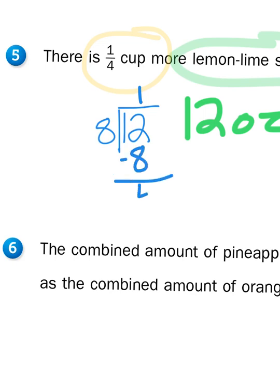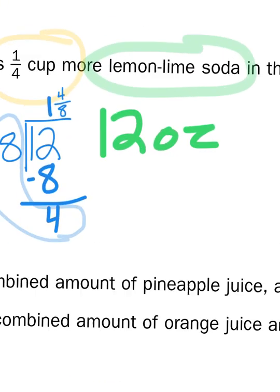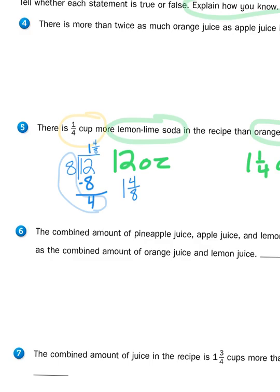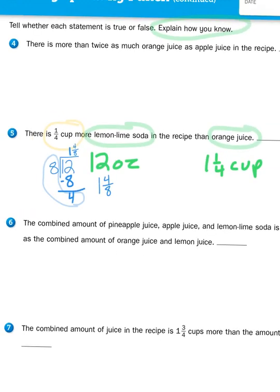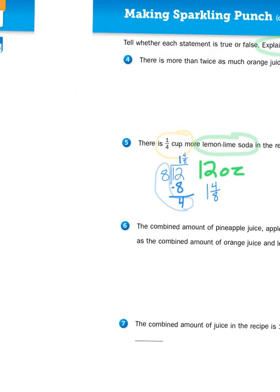So, 12 minus 8 leaves me 4. 4 is too small. It's smaller than my divisor, so I know that I'm done. So, my remainder is 4 eighths. So, 12 ounces is the equivalent of 1 and 4 eighths cups of lemon-lime soda. 1 and 4 eighths. Now, one more piece of business. We have two different denominators for our fractional parts, eighths and fourths. So, I need to convert 8ths into fourths. Now, I'll show you with a quick visual that when I have a rectangle and I divide it into 8 parts, 4 eighths would be represented like this.